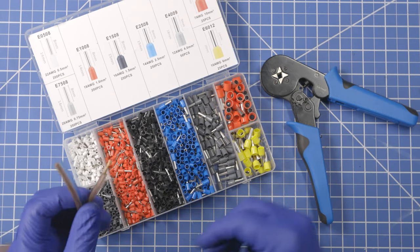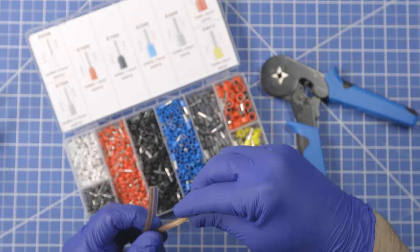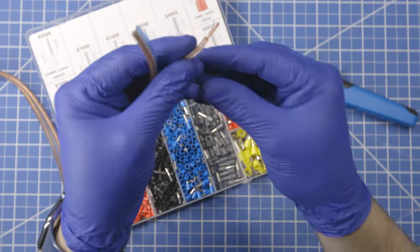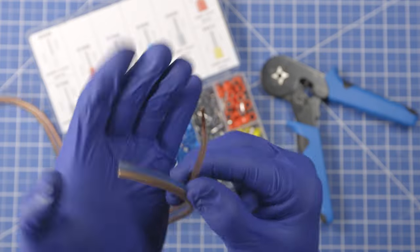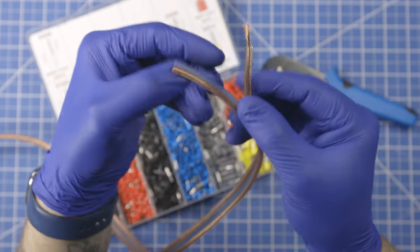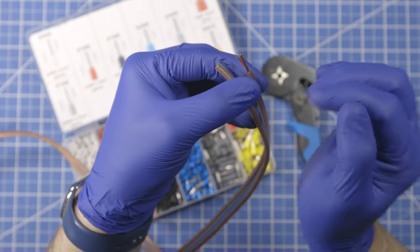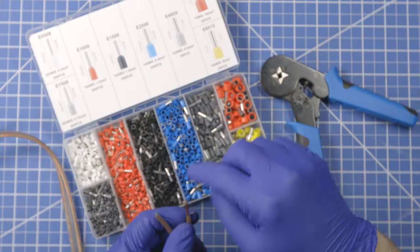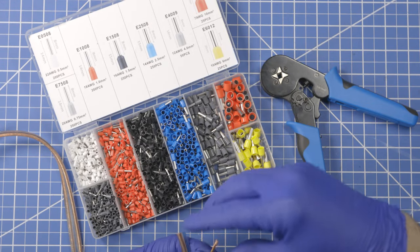So I grabbed some speaker wire here. And what these ferrules do, you know how when you have that one piece of the wire sticking off, and if the connectors are really close together, sometimes this little guy will short against the other terminal? That is what these ferrules are designed to help prevent.